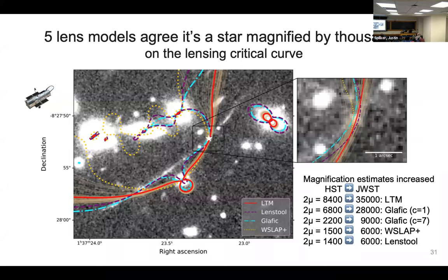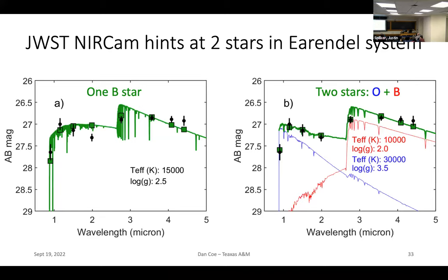Already with the imaging we see hints of more than one star. In this case we have eight filters and the black points show the photometry. You can kind of fit it with one star — a B star around 15,000 Kelvin — but it's better fit by two stars: one really hot O star around 30,000 Kelvin, and then a B star. We're not too certain about that yet and we'll get spectra to figure it out better. But we're already seeing hints that when we talk about Arendelle, there are multiple stars here — and what does that mean for what we hope to learn from this?